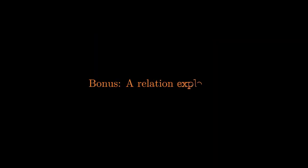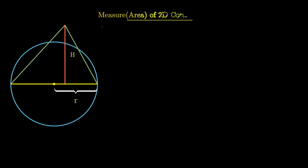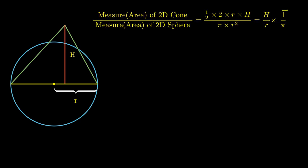For a bonus part that the paper also covers is the introduction of a constant called ball factor. For intuition of what that means, let's look at a few examples. If a triangle is inscribed in a circle with radius r, such that its base is the diameter and has height h, the ratio of the measure of 2D cone, that is the area of the triangle, to the measure of 2D sphere, that is the area of the circle, turns out to be h by r times 1 by pi.